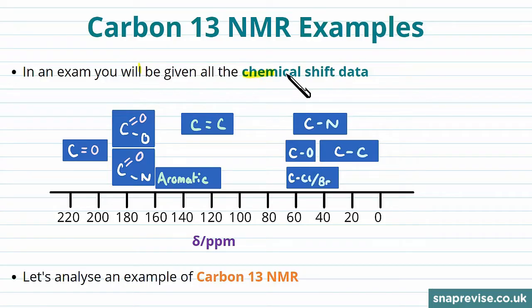In an exam you're going to be given the chemical shift data so you don't need to memorize it. What this will look like is the chemical shift along the bottom ranging from zero, which we know is TMS the reference, and it's going to go up to about 220 for carbon, showing the usual things you would expect to see in a molecule.